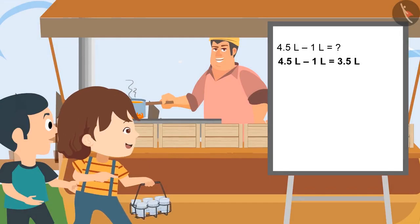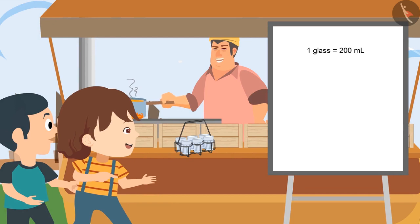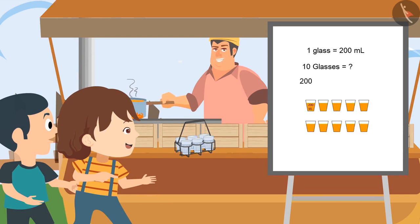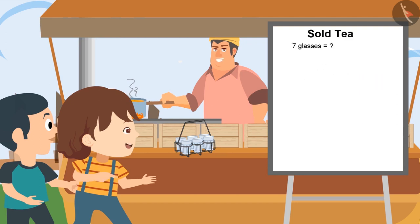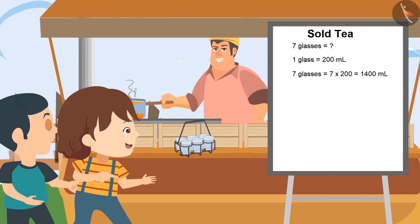Could you please bring the cup of tea? Sure, Daddy. Here is the cup of tea. If each cup carries 200 millilitres of tea and I have made 10 cups of tea, can you tell me how much millilitres of tea I have prepared? 2,000 millilitres. Two hundred multiplied by 10 means 2 litres. Yes, you both are right. I have sold 10 cups till now. If one cup contains 200 millilitres of tea, then 7 cups contain 7 multiplied by 200, that is 1,400 millilitres of tea.